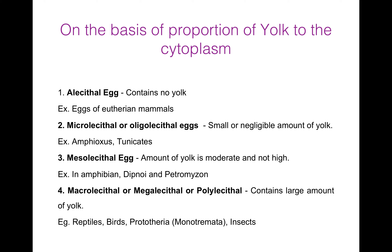Mesolecithal Eggs. Amount of yolk is moderate and not high. These type of eggs are present in Amphibians, Diphnoi, and Petromyzon. Now, Macrolecithal Eggs, which are also known as Megalecithal and Polylecithal. They contain a large amount of yolk. This type of eggs are present in Reptiles, Birds, Prototheria — that is Monotremata — and Insects.